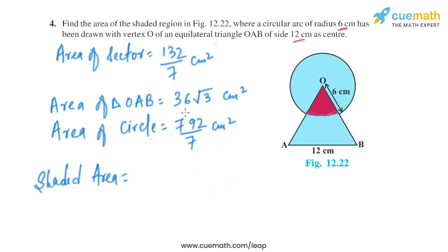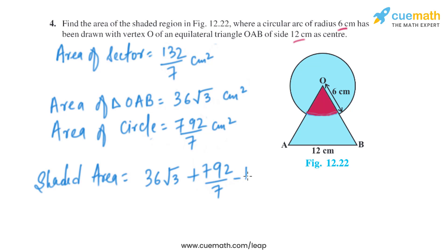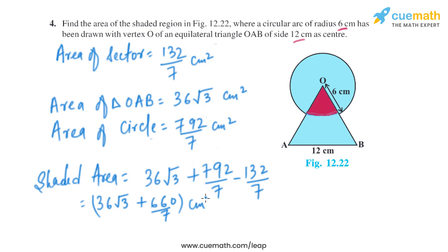Now let's find the shaded area. We add the area of the circle and the area of the triangle, but doing so counts the sector area twice, so we subtract the area of the sector. That gives us 36 root 3 plus 792 divided by 7 minus 132 divided by 7, which simplifies to 36 root 3 plus 660 divided by 7 square centimeters. That is the area of the shaded region.